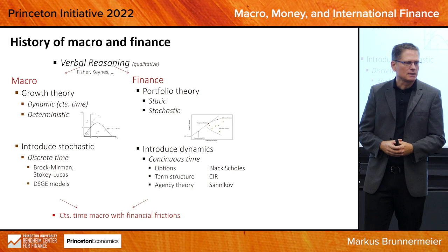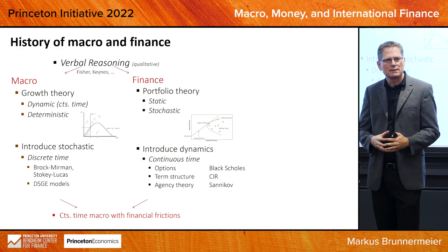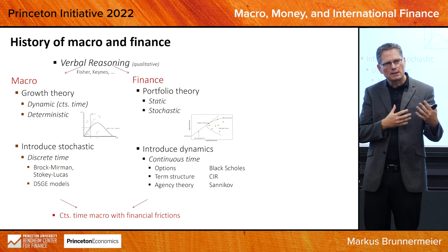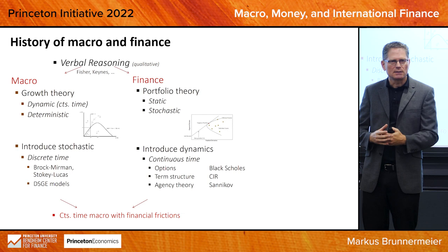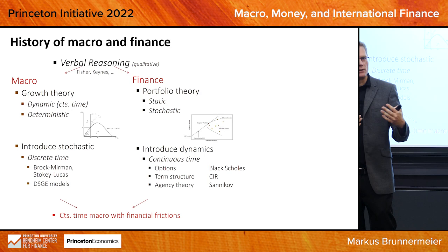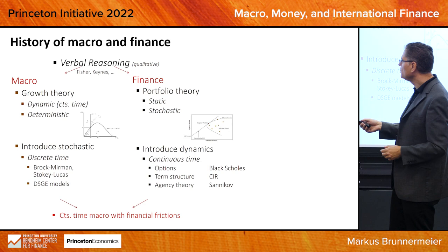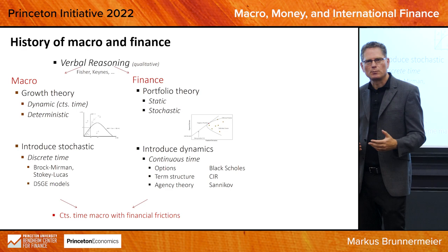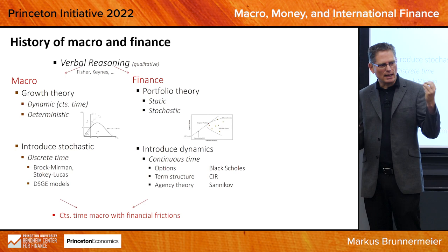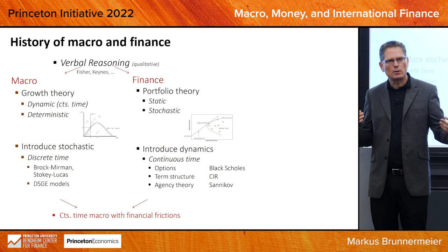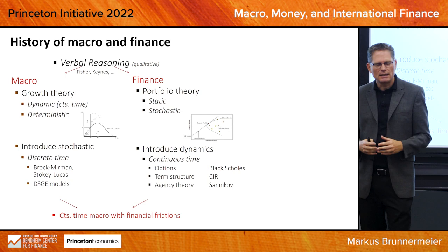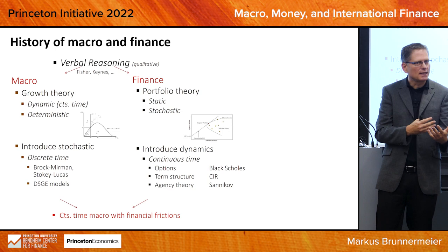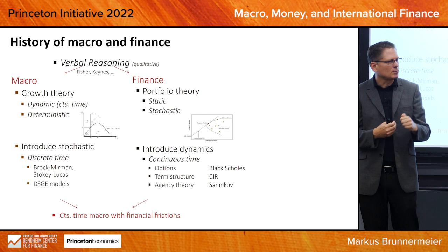After the Second World War, it grew into two separate fields when it became more formalized. On one hand, you have macro focusing very much on the dynamic aspects, and finance focusing more on the static but stochastic elements. Macro was focusing on deterministic dynamic aspects like growth theory — depicted here as a phase diagram — while finance focused on a Markowitz portfolio choice problem, which was static but stochastic. Then around the 1970s, the macro field was also introducing stochastic elements, and that was done in discrete time.